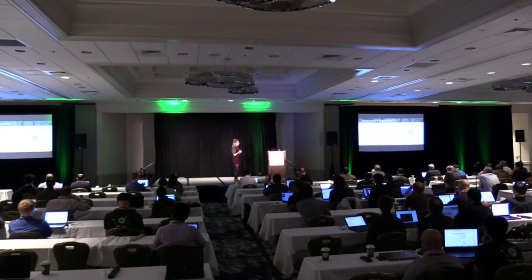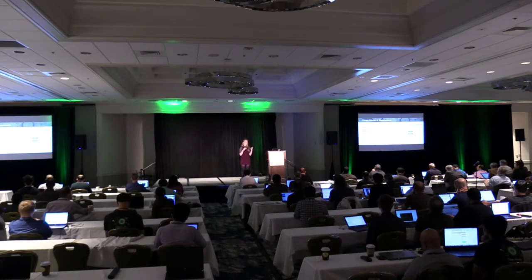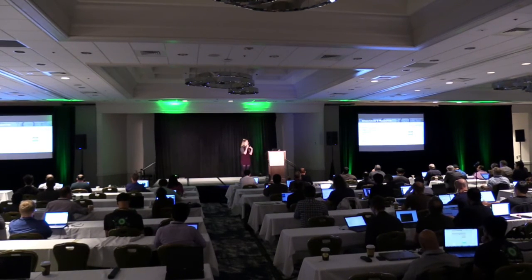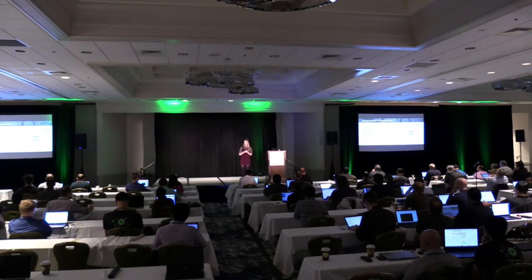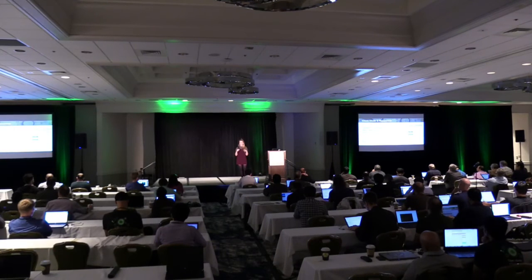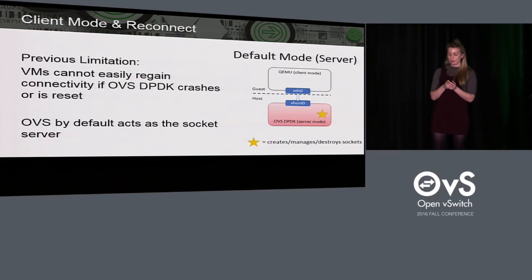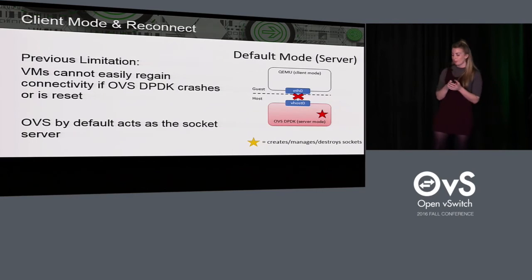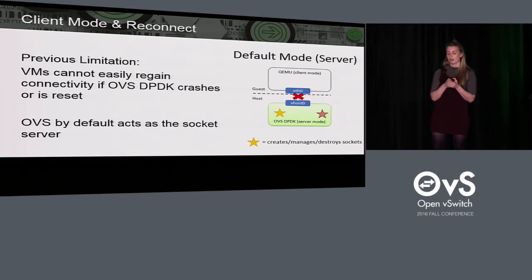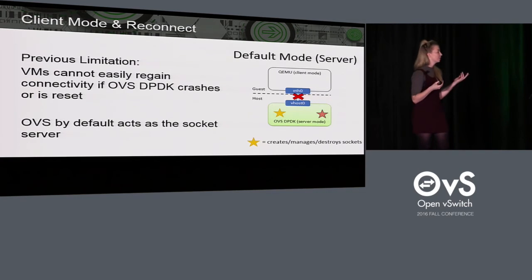The reason for this limitation comes down to the architecture of vhost user. Vhost user uses a Unix domain socket to pass control messages between OVS and QEMU. In the default mode, it's OVS DPDK that creates the socket and QEMU connects to it. So if the switch goes down, the socket goes down as well, and QEMU is left listening on a dead connection. If you bring the switch back up, a new socket is created in the same location, but QEMU doesn't know about this new socket and is still sitting there listening on the dead connection.